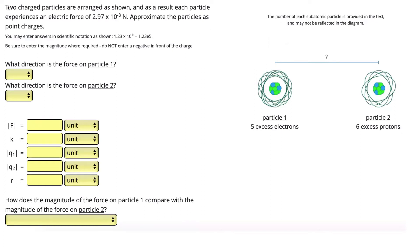In this problem we have two charged particles arranged as shown in the diagram. Particle one has five excess electrons and so is negatively charged. Particle two has six excess protons and is positively charged. Each particle experiences an electric force of 2.97 times 10 to the negative 8 Newtons, and we're approximating the particles as point charges.